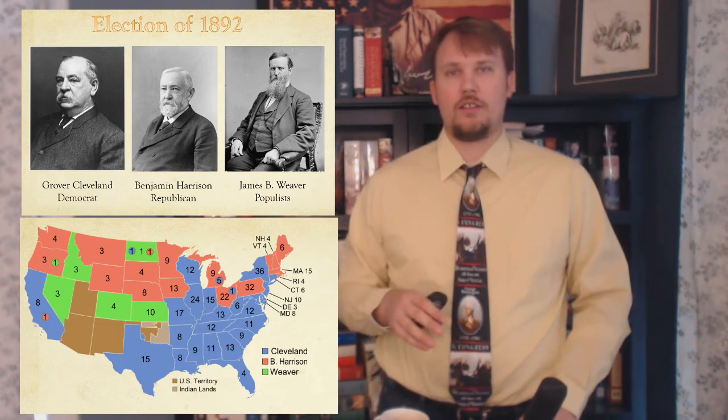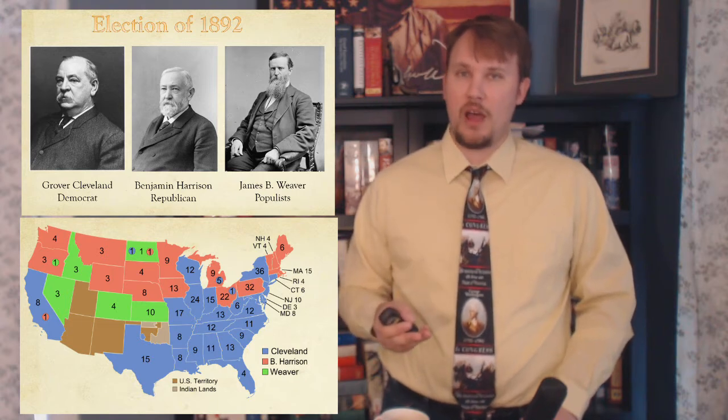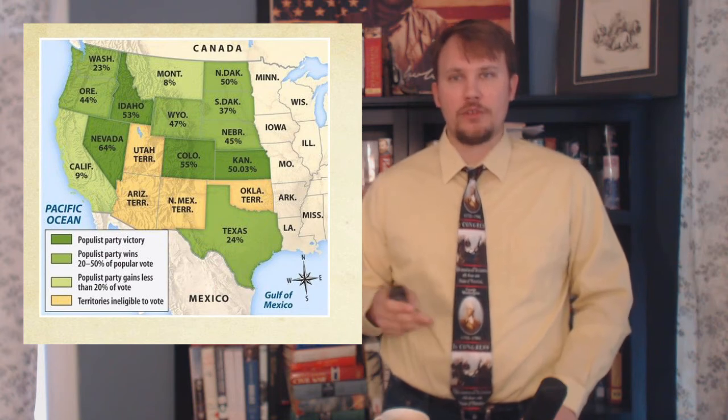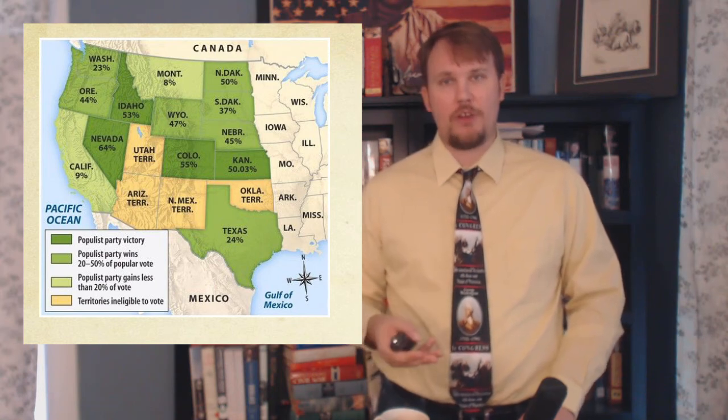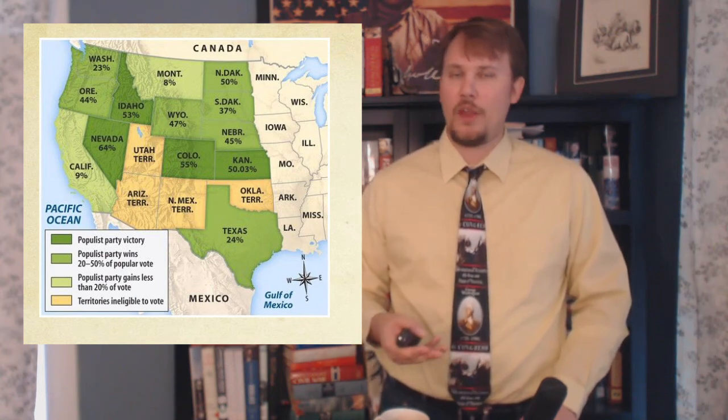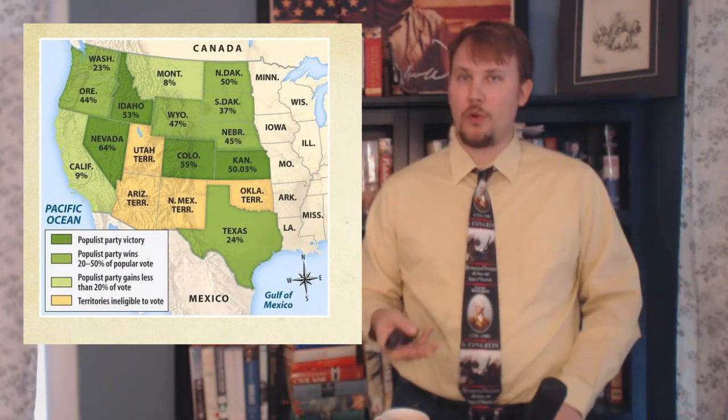The election was not necessarily a defeat for the Populists — there were many ways to count it as a victory. They won over 1,500 local elections, elected five senators and ten representatives to the House, and captured three governorships. They also won some states presidentially and some electoral votes. In states they lost, they came very close — winning 45% in Nebraska and 44% in Oregon.